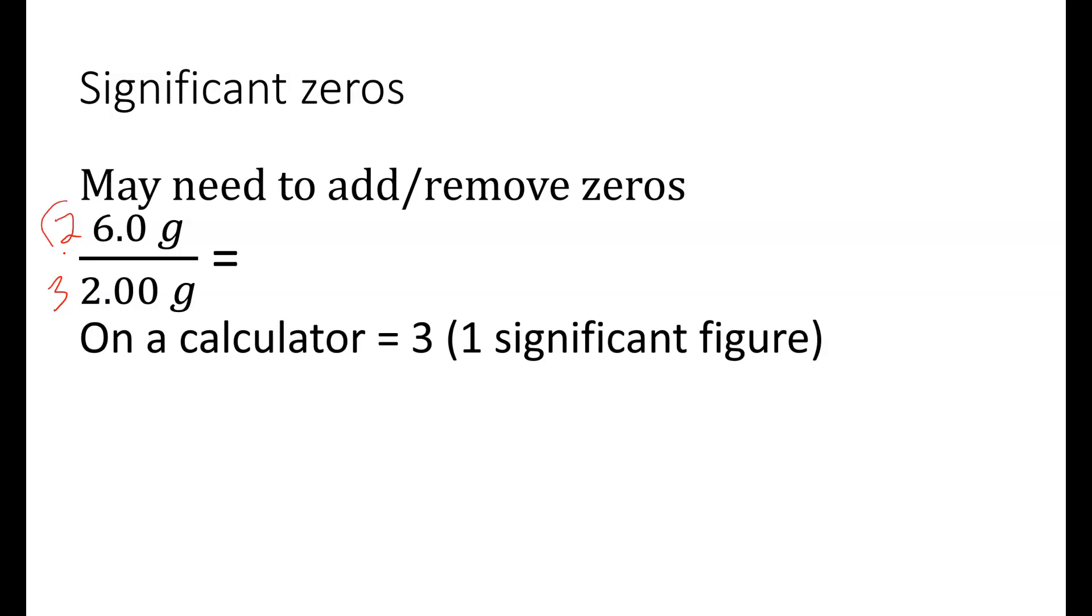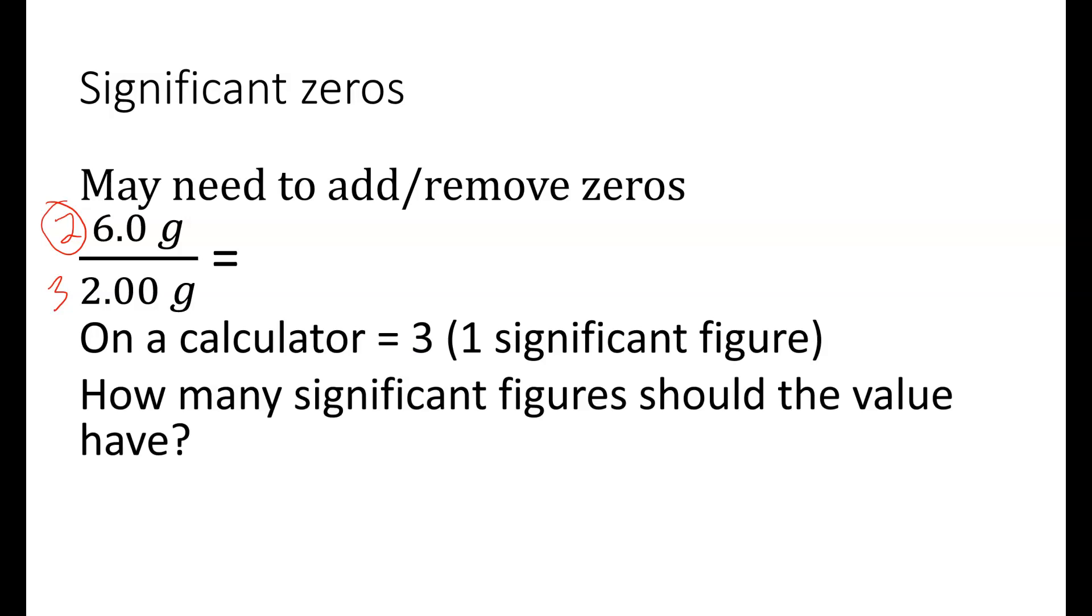We need to have two significant figures in our final answer. So, we have to find a way of writing three with two significant figures. We can do that by adding a zero to it. We can write that as 3.0, so that gives us our two significant figures. The three and the zero are significant. We've got that decimal place in the value.